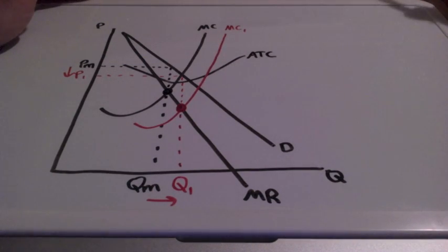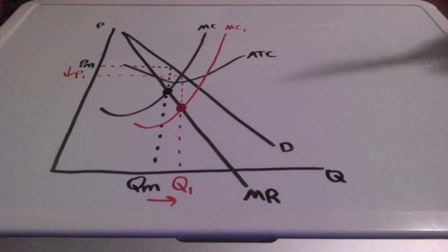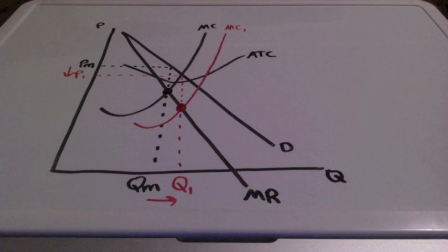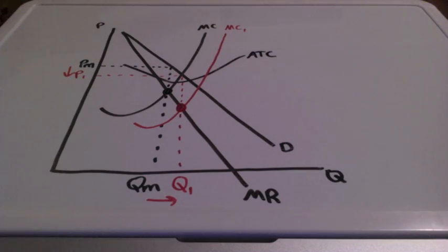So the per-unit subsidy, prices go down, quantity goes up. This is how the government can motivate with incentives to get the monopoly to produce at the socially optimal level.